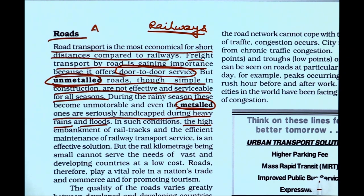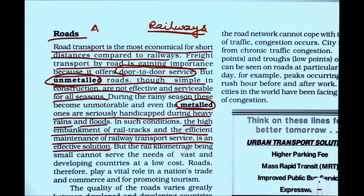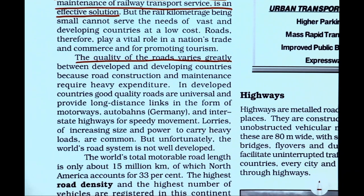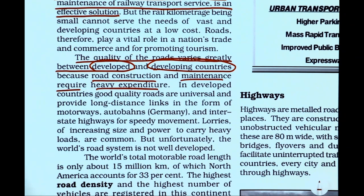In such conditions, the high embankments of the rail track and efficient maintenance of rail transport service is an effective solution — which is why I say it is about complementarity. The quality of roads varies greatly between developed and developing countries because road construction and maintenance requires heavy expenditure. When we talk about the road sector, we have maximum road density in the developed world. The world's total motorable road length is only about 15 million kilometers, of which North America accounts for 33 percent, with the highest road density and highest number of registered vehicles.